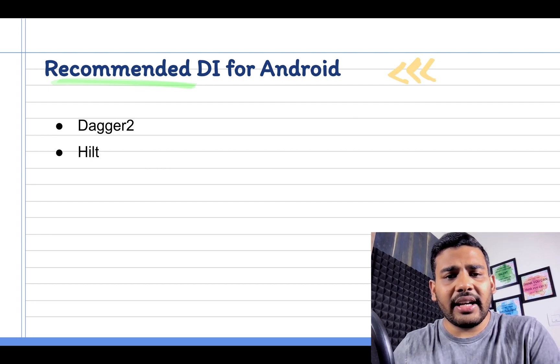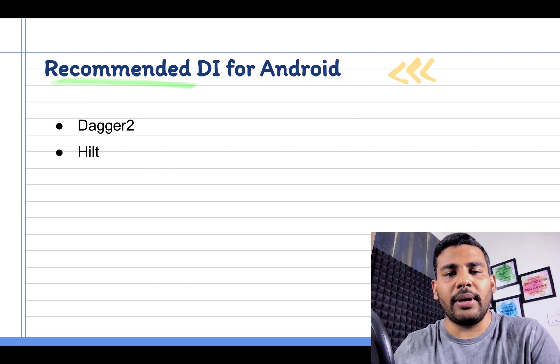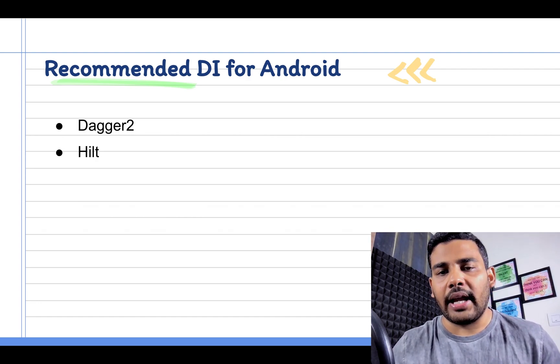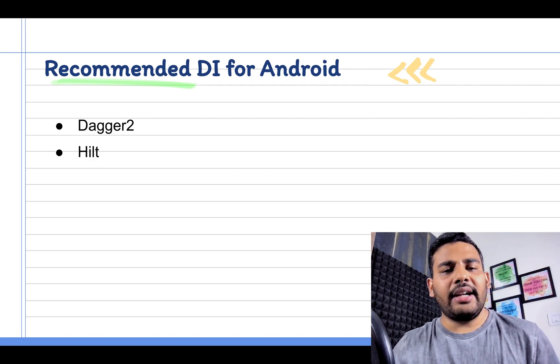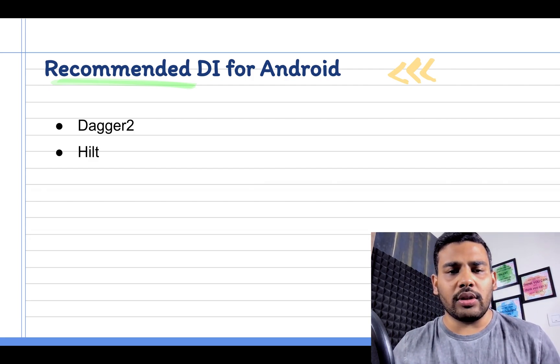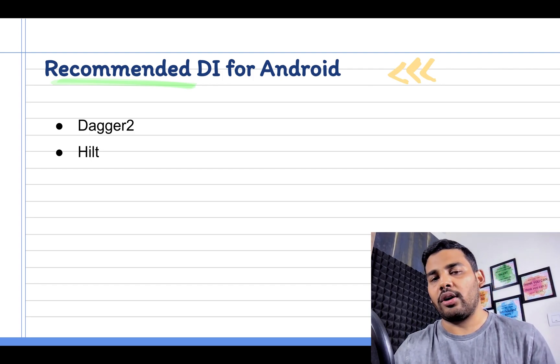In fact, Hilt is the recent library that is built over the top of Dagger and now is the recommended solution by Android Jetpack. And Dagger 2 is also maintained by Google and it is also the recommended DI for Android projects.